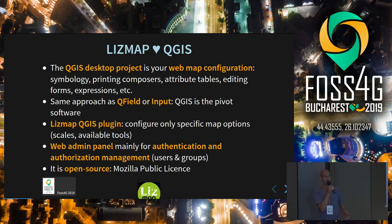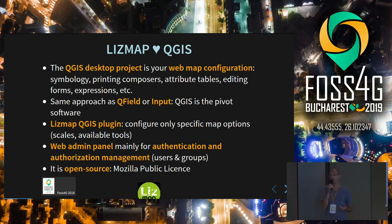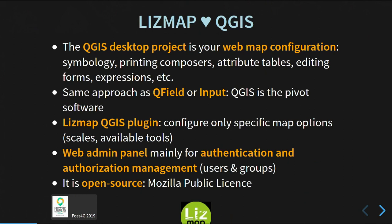LizMap loves QGIS. It is made based only on QGIS Server. The desktop project is your configuration — you will add your layers and find all the formats that QGIS can open: vectors and rasters. Then there is a LizMap plugin. You just need to configure the parts specific to the map, like the scales and the base layers. But every data and every property is configured in the QGIS project.